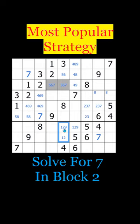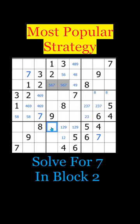Now by using crosshatching, we look across rows 9 and 8 to see that a 7 is already in those two rows, so the only place left for a 7 in block 8 is right here. This means we can eliminate a 7 from this gray cell, and that leaves only one other cell in block 2 that contains a 7.